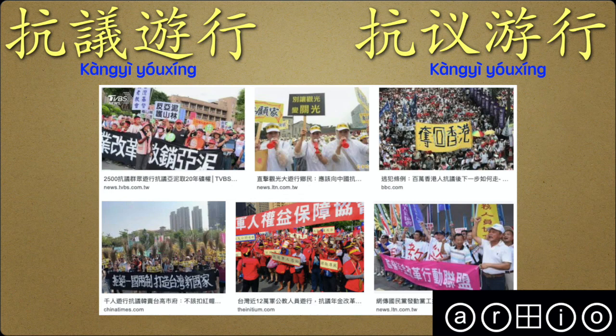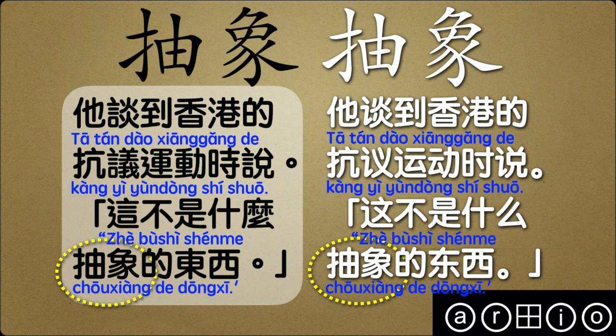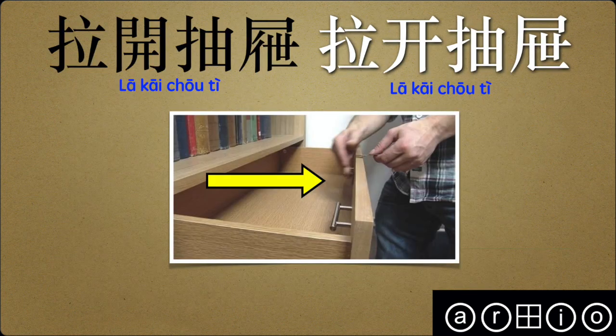If you read Chinese government publications or Chinese government propaganda, you will very often see more disparaging terms being used to refer to protest. So: 他谈到香港的抗议 — if you don't recognize 香港, that is how we say Hong Kong in modern standard Mandarin. He spoke about the protests in Hong Kong. This is not something abstract. 这不是什么抽象的东西.